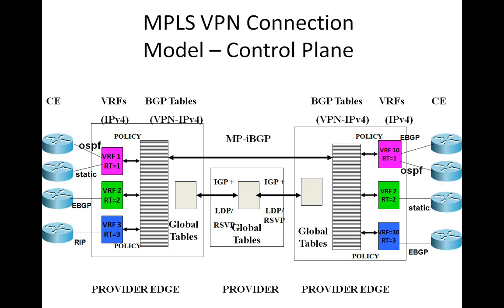This way, all the pink VPN customers can talk to each other, all the green VPN customers can talk to each other, and all the blue VPN customers can talk to each other. In the middle, we have the global routing tables. We need to be able to connect each of the provider routers to each other, and that is achieved through this global IPv4 routing table, wherein you can be running OSPF or ISIS, and you are also running your MPLS protocols to set up the tunnels.